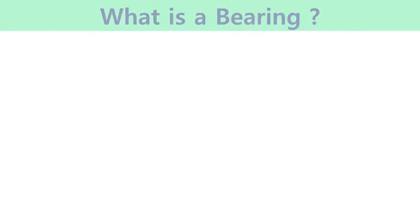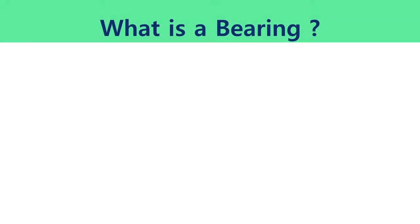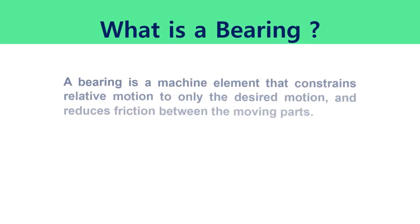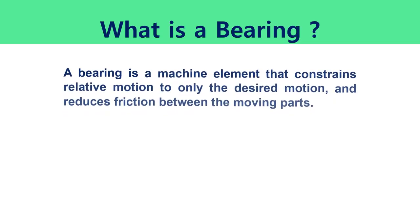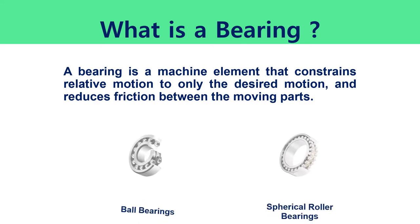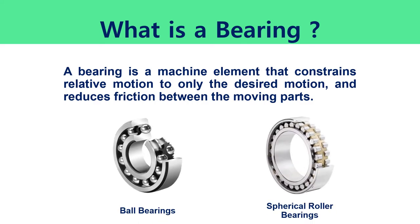Let us first define what a bearing is. A bearing is a machine element that constrains relative motion to only the desired motion and reduces friction between the moving parts. Ball bearings and spherical roller bearings are two examples of types of roller bearings.